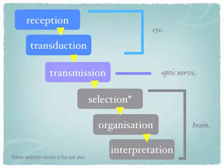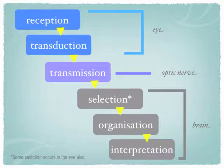Reception, transduction, transmission, selection, organisation, interpretation. Reception and transduction occur in the eye. Transmission is through the optic nerve, and in the brain we have selection, organisation, and interpretation. Please note that some selection also occurs in the eye itself.